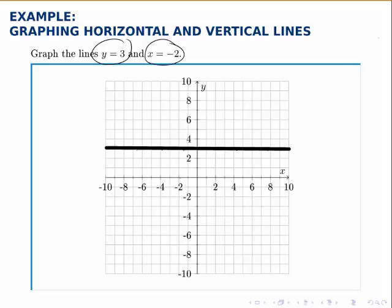So if the x coordinate is negative 2, they'll line up here where the x's are negative 2, and it can be any point on this vertical line now.